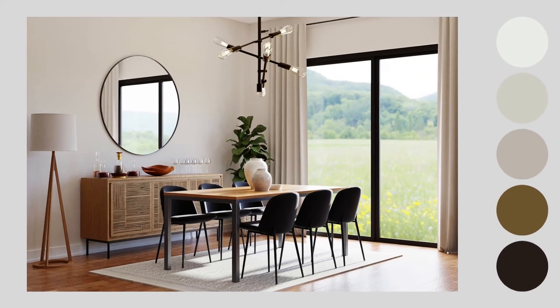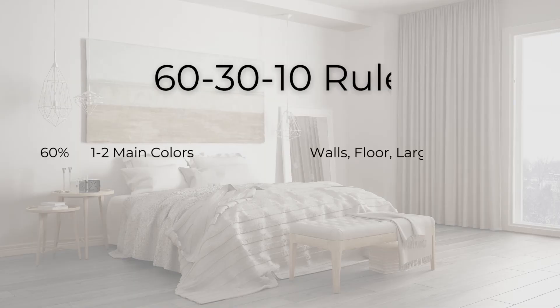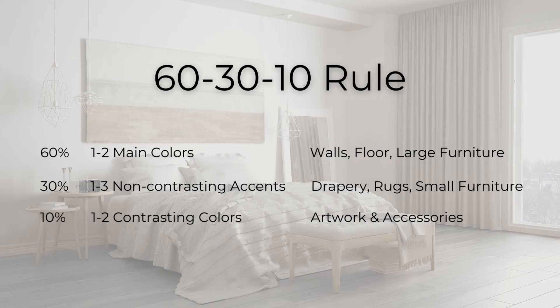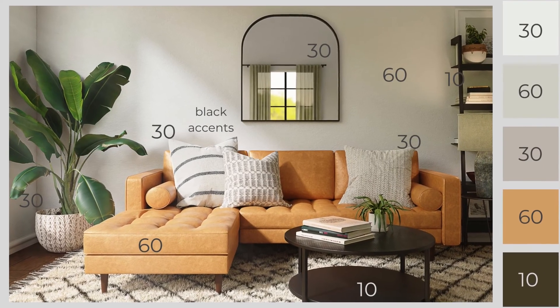The Rule of Three can also be applied to color selection and bumps into another design guideline, the 60-30-10 rule, which states that 60% of the room should be in one or two main colors for your largest surfaces like floors, walls, and large furniture pieces. 30% of the room should be in one to three subtle and non-contrasting colors that accentuate the main colors, in the form of drapery, rugs, and small furniture pieces. And 10% of the room should be in contrasting accent colors in the form of lighting, artwork, pillows, and other accessories. So you're essentially breaking up your color groupings into three, creating cohesion with the 60-30 portion and interest with the 10% portion of your color selections.